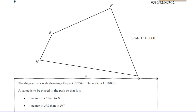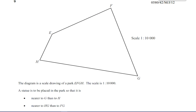We have a question being asked — request for question number 9 from summer 2012, April 4, variant 2, a question about loci and construction. In this question, we have been given a diagram of a scale drawing of a park, EFGH, it's a quadrilateral shape. The scale is 1 to 10,000, meaning a length of one centimeter on the map is 10,000 times bigger in real life.